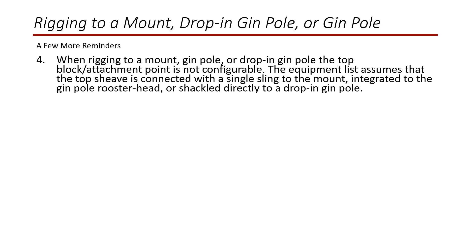When rigging to a mount, jimple, or drop-in jimple, the top block slash attachment point is not configurable. The equipment list assumes that the top sheave is connected with a single sling to the mount, integrated to the jimple in the form of a rooster head, or shackled directly to a drop-in jimple.